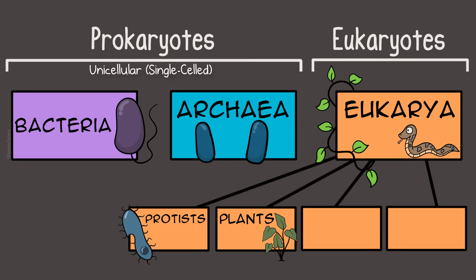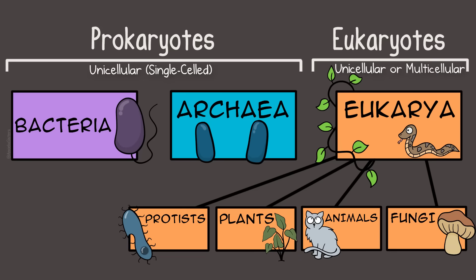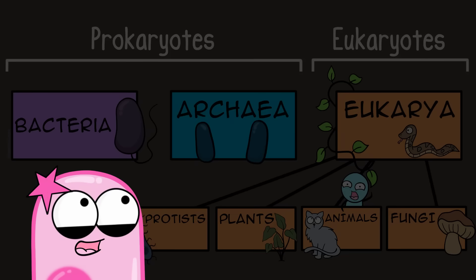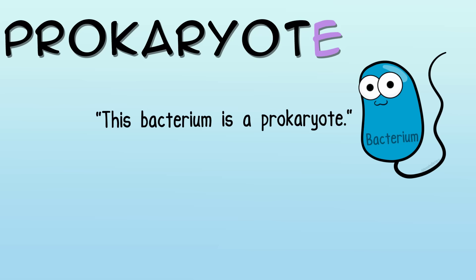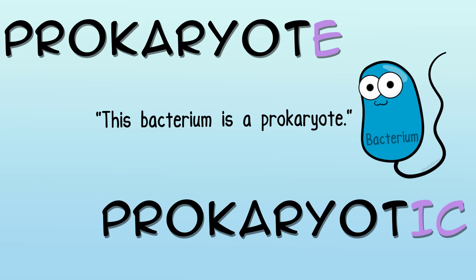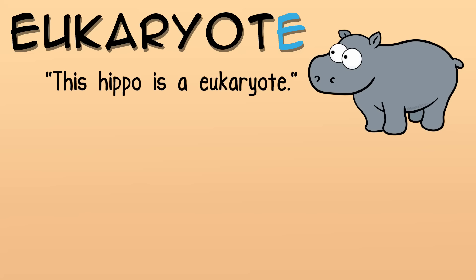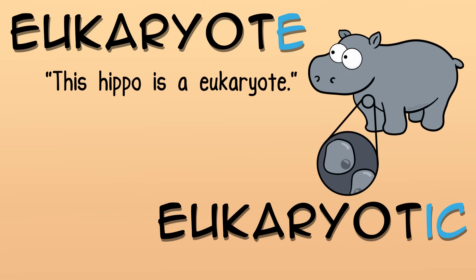Eukaryotes can be protists, plants, animals, or fungi. They can be unicellular or multicellular, which means they can be made up of many cells — like you. Just to clarify, the word prokaryote typically refers to the organism itself; when describing its cell, you are describing a prokaryotic cell. Same for eukaryote — eukaryote refers to the organism, and its cells are eukaryotic cells.